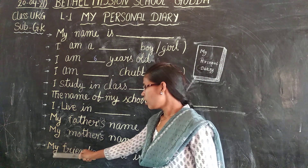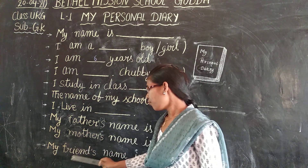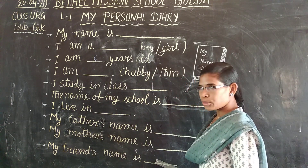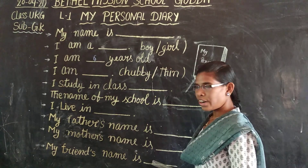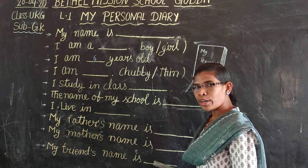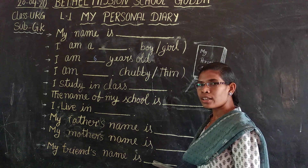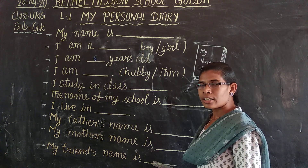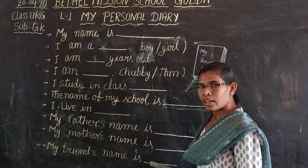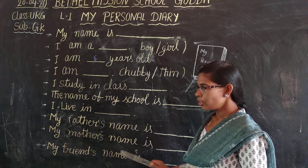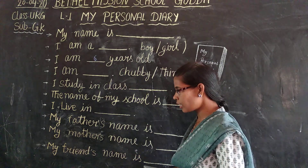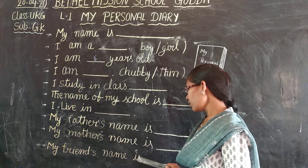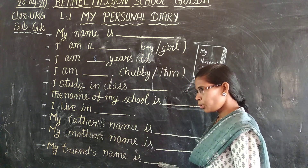Next line: My friend's name is Raju. So what's your friend's name? You have to write your friend's name — Raju, Rohan, Gita, Sunita, etcetera. So you have to write your friend's name. My friend's name is Sunita.